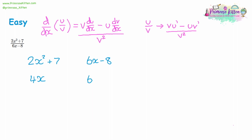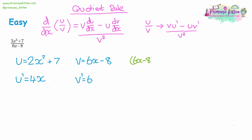The numerator is u and the denominator is v, so the differentiated versions are u dash and v dash. We've done the differential part already. All we need to do now is substitute into the quotient rule. So firstly we need v, which is 6x minus 8, multiplied by u dash which is 4x. Taken away from that we have u, which is 2x squared plus 7, multiplied by v dash which is 6. All of that is divided by v squared — so v is 6x minus 8, and we are squaring it.